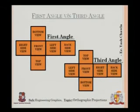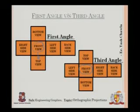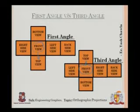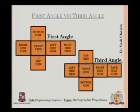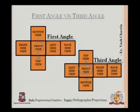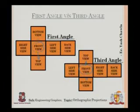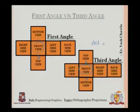Comparing first and third angle: in first angle the top view is below the front view; in third angle the top view is above the front view. Similarly, the bottom view is opposite in each — in first angle the bottom view appears above the front view. In third angle, everything is where it should be: the right-hand side view is on the right, left is on the left, top is at the top, and bottom is at the bottom.